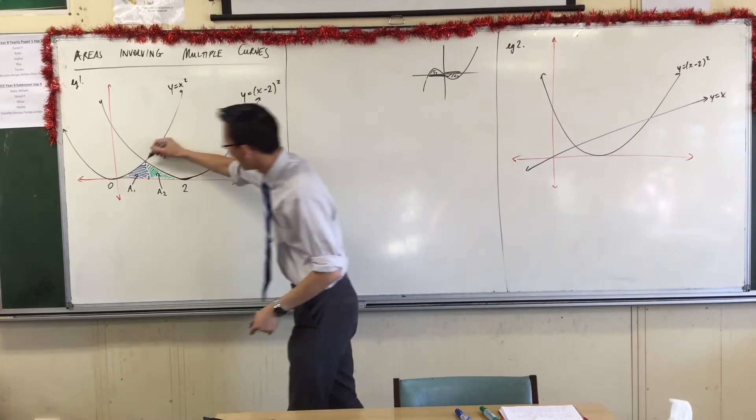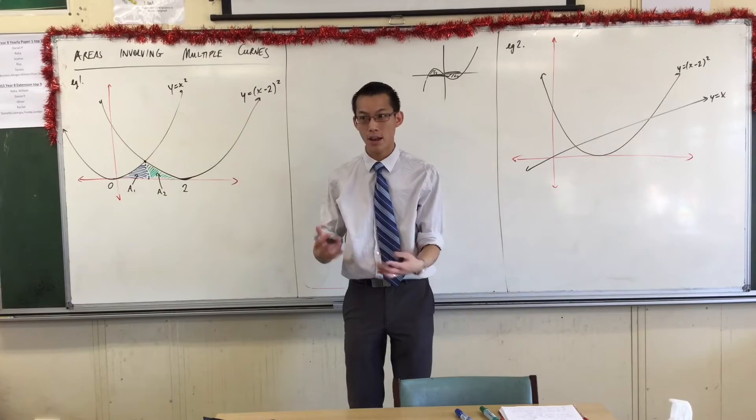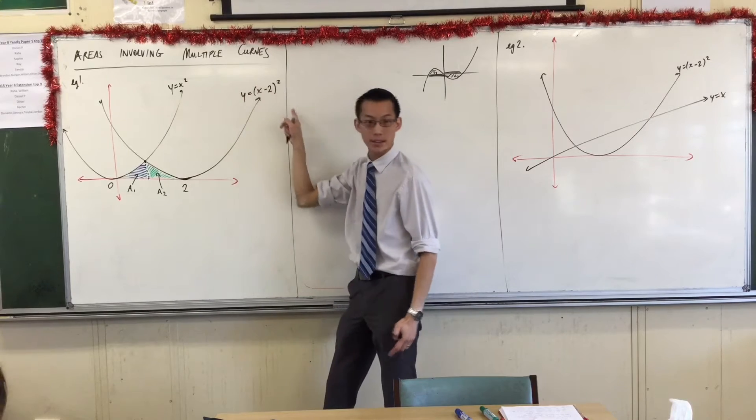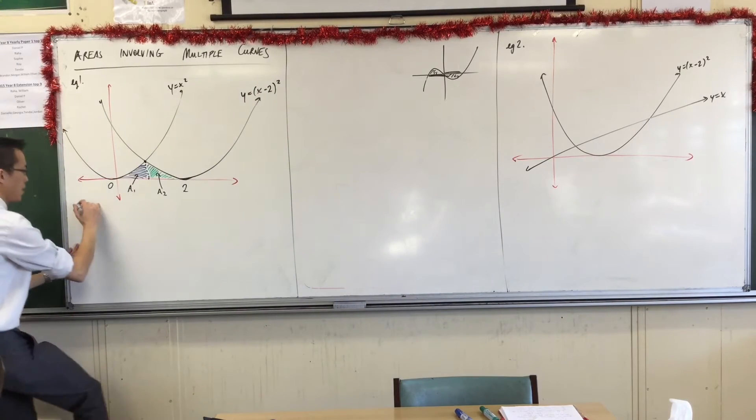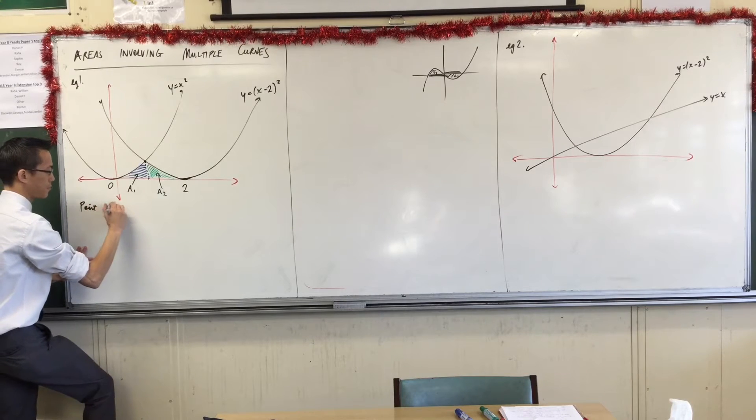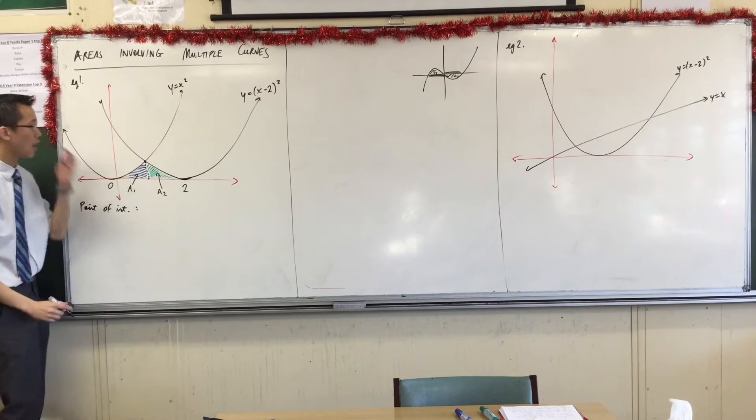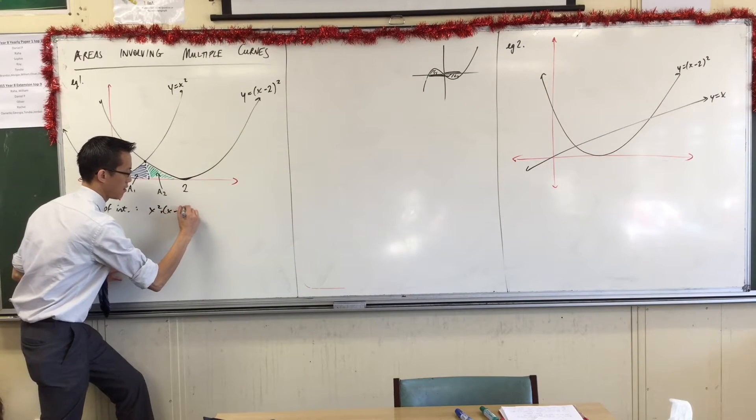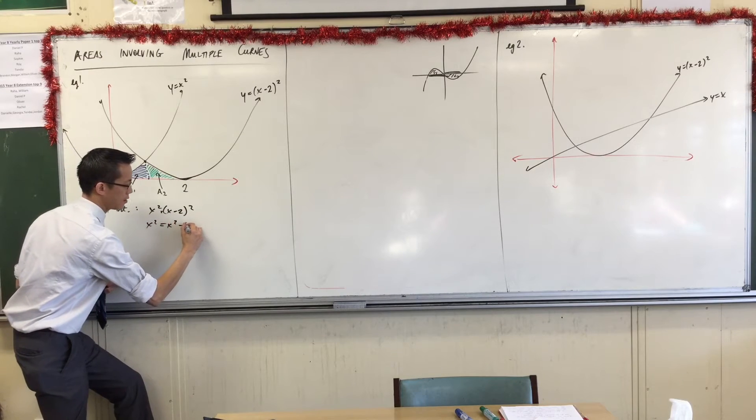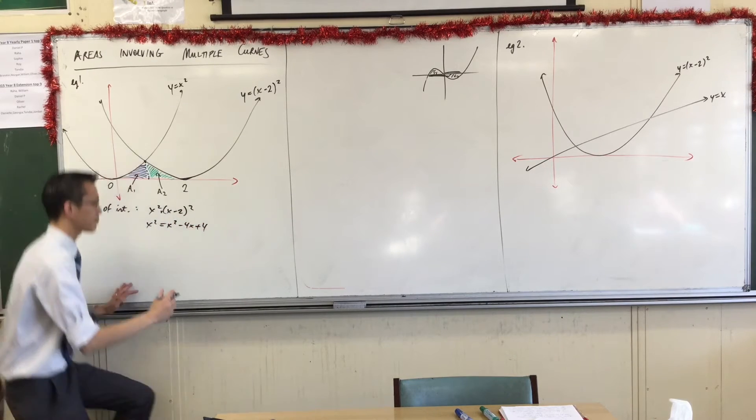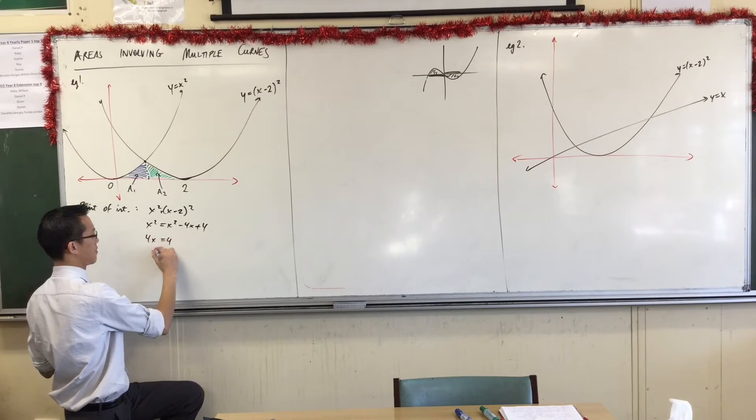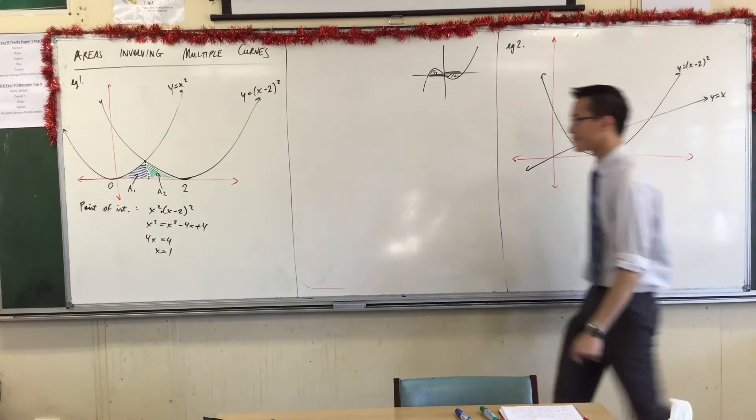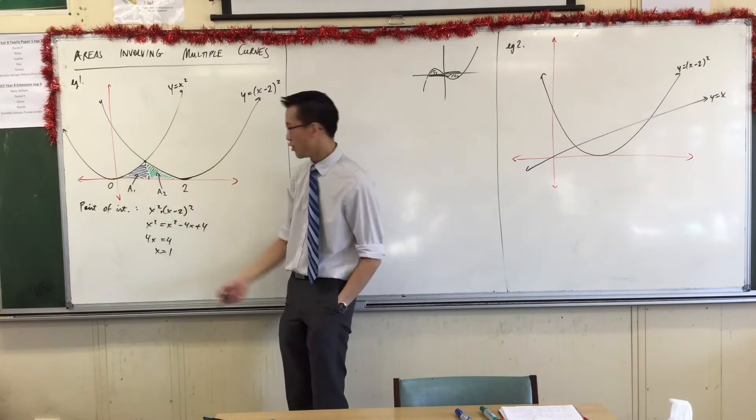This point up here that defines the upper bound is really the point of intersection between these two graphs. So therefore, I'm just going to solve for when this graph intersects with that one. That's not too complicated. So let's quickly do that. I'll leave them right what I'm doing. The point of intersection is when x squared is equal to x minus two, all squared. So if we quickly expand this out, and there's that number that you're already expecting because it is, indeed, halfway between zero and two.